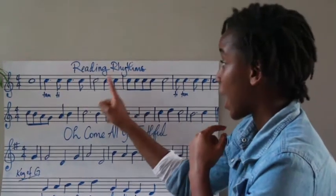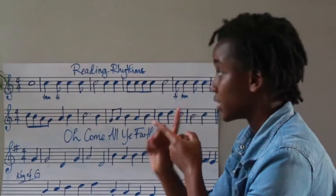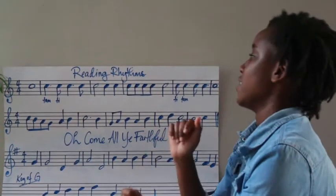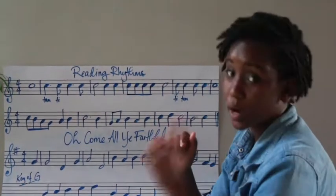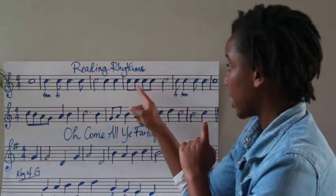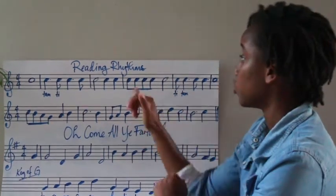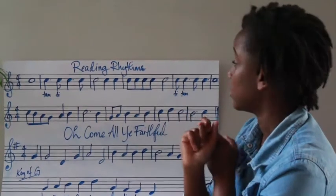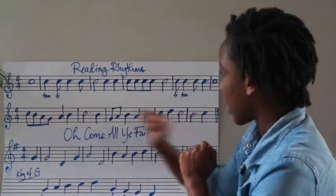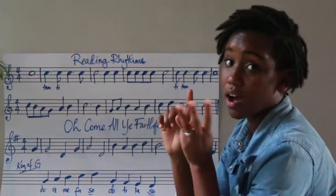We have the half note which has two beats — we read that as Ta, Ah, Ta, Ah. Then we have a quarter note, one beat: Ta. The eighth note is half a beat: Ti. So two eighth notes would be Ti, Ti. And then we have the dotted half note which has three beats: Ta, Ah, Ah.